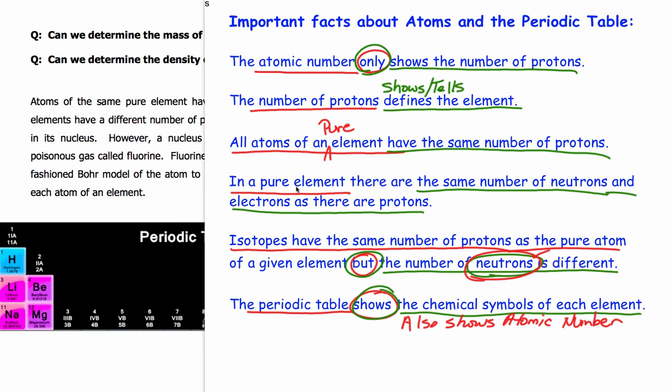Okay, so atoms of a pure element, atoms that are pure of an element, can have the same number of protons, neutrons, and electrons. Now, the atomic number still only tells us how many protons there are.